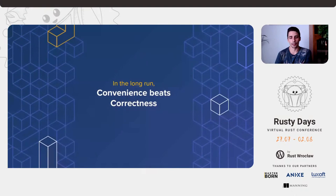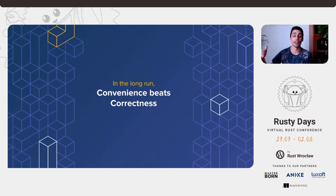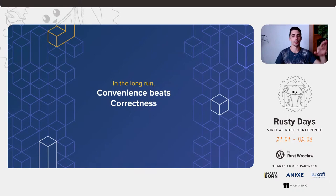My personal model is: convenience beats correctness. If doing the right thing is in any way more complicated than doing the wrong thing, then someone at a certain point will find a reason not to do the right thing — they have a deadline next Monday, or they think the small thing won't get big. Then it gets big, then it fails, and then you have problems. You want to fall into the pit of success, where doing the right thing is the easiest thing to do.